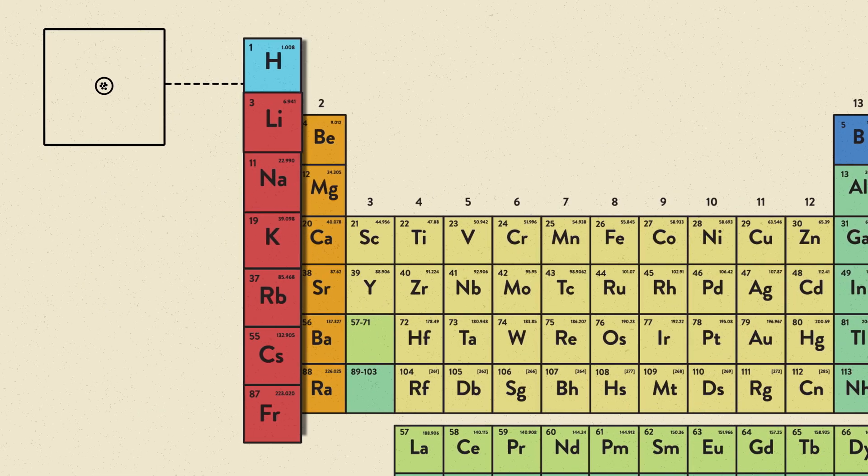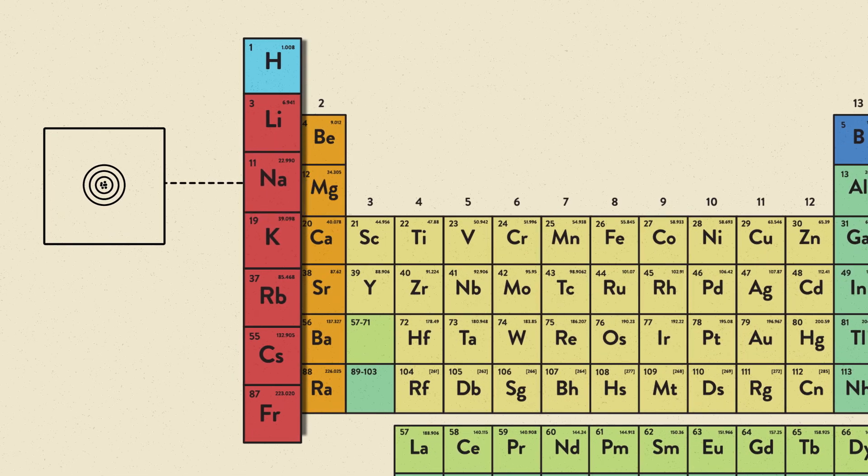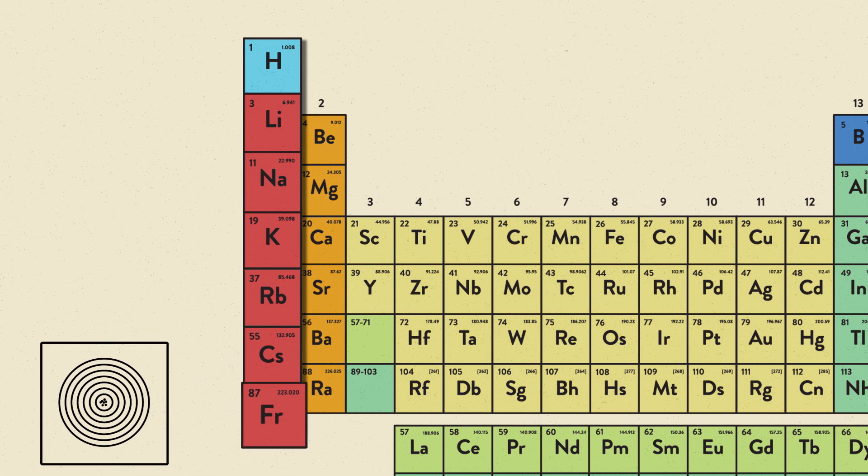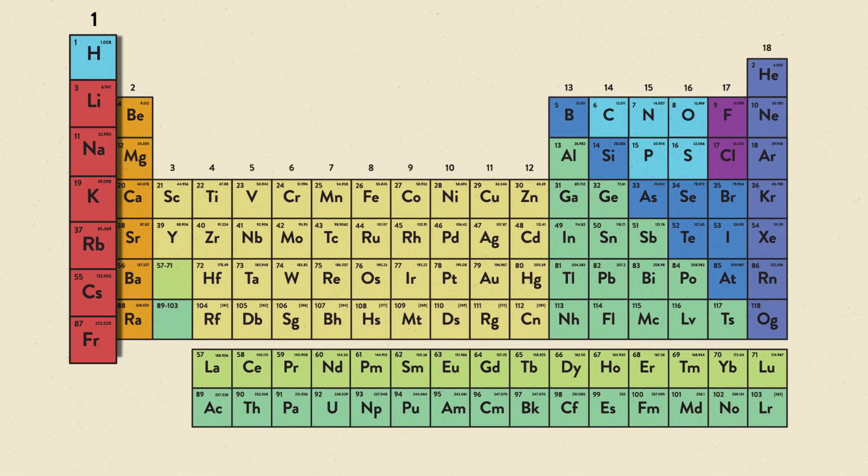As you travel down a group, you are adding electrons to energy levels that are farther away from the nucleus. All elements in group 1 have one valence electron, but different electron configurations based on their period.